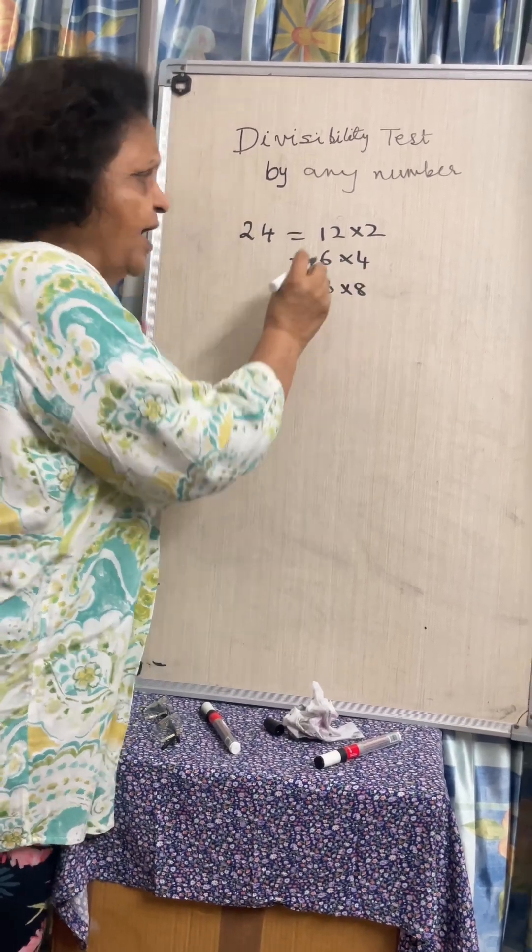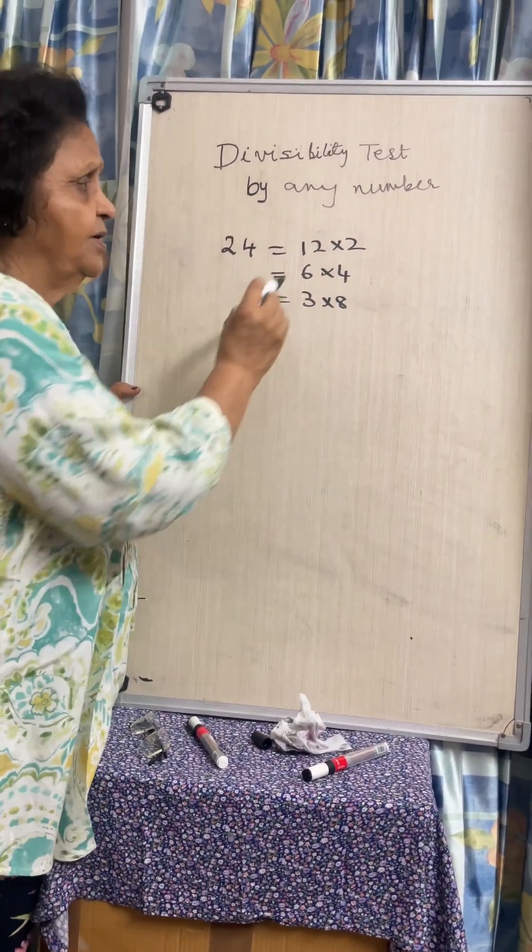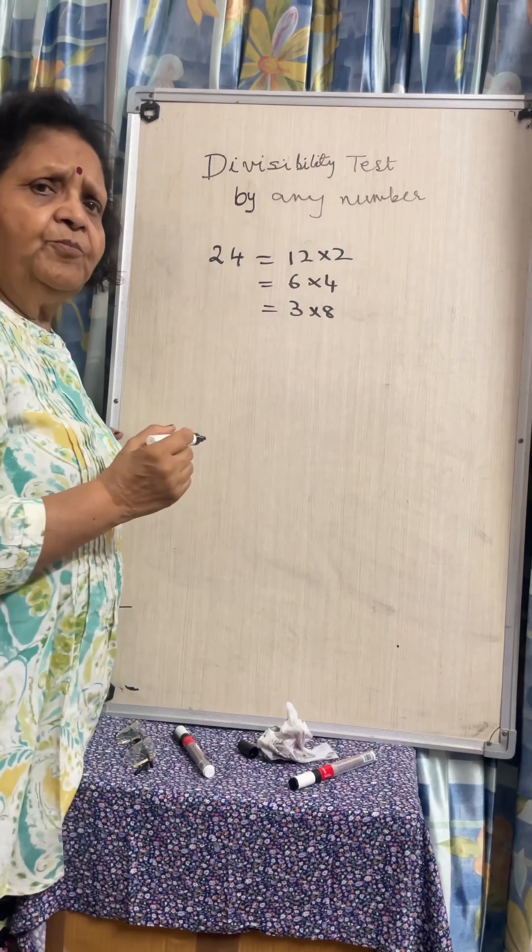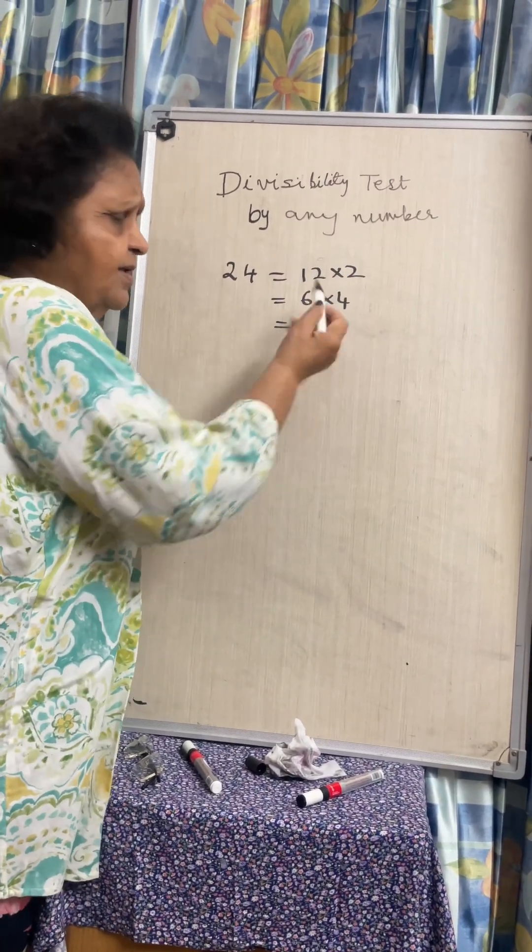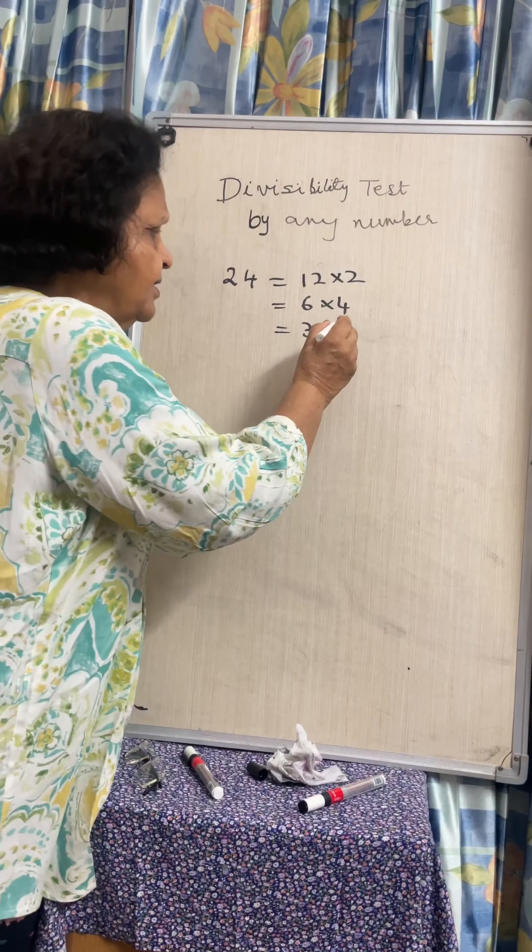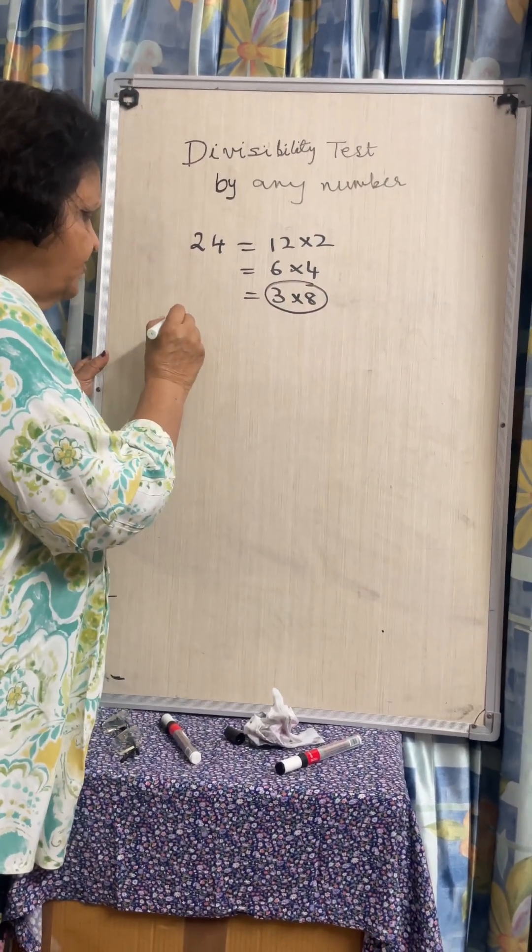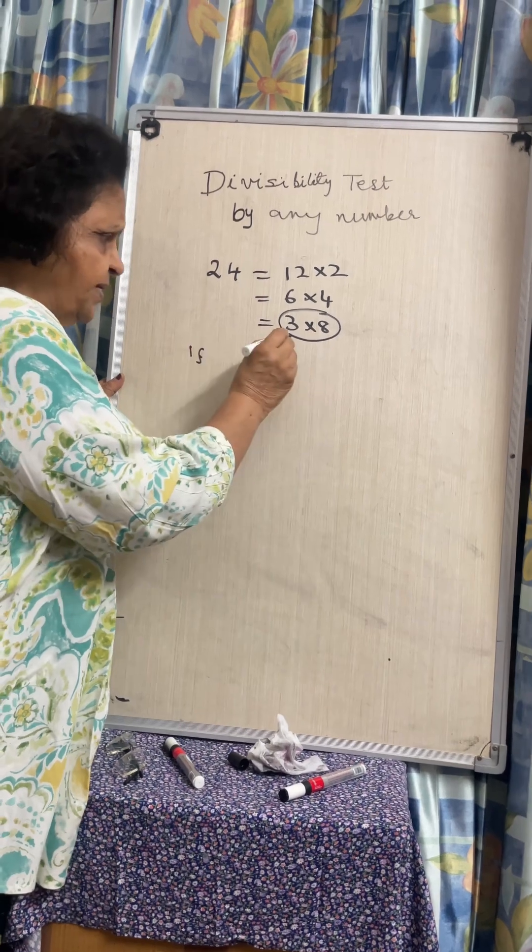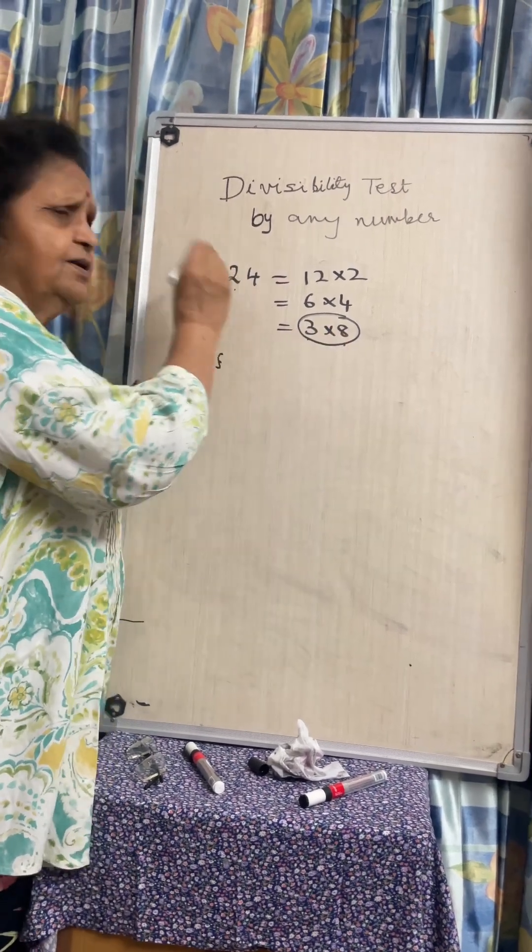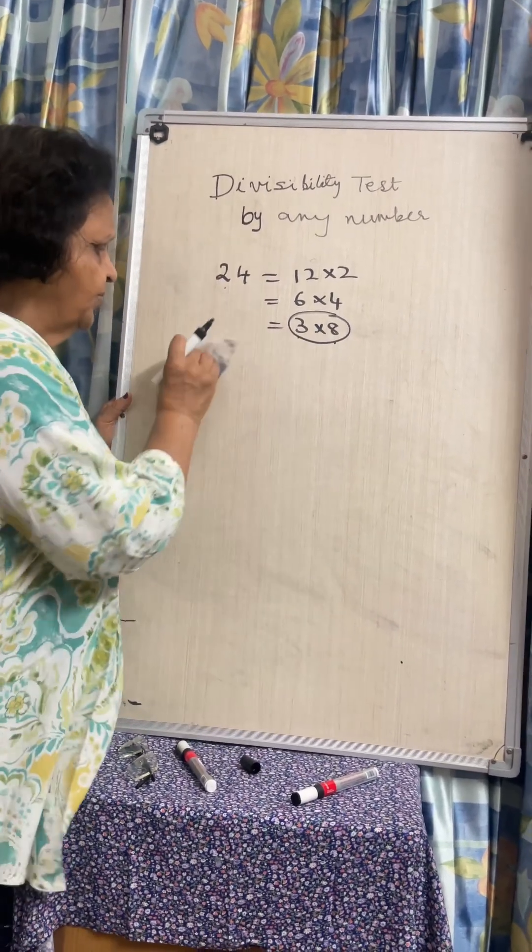Choose the two factors which are co-prime to each other. 12 and 2, they are not co-prime, 2 is the common HCF. 6 and 4, again 2 is a common factor. And 3 and 8 are co-prime. So if a number is divisible by 3 as well as 8, it will be divisible by 24.